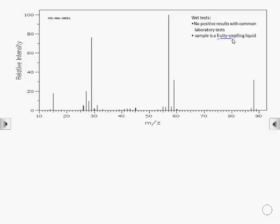Here we're interpreting a mass spectrum. Starting with what we know about the molecule: being a fruity-smelling liquid suggests an ester. The lack of a result with Brady's reagent or Tollens' reagent suggests this is not an aldehyde or ketone. We could also have tested it with sodium carbonate solution or universal indicator. The lack of a positive result suggests it's not a carboxylic acid.